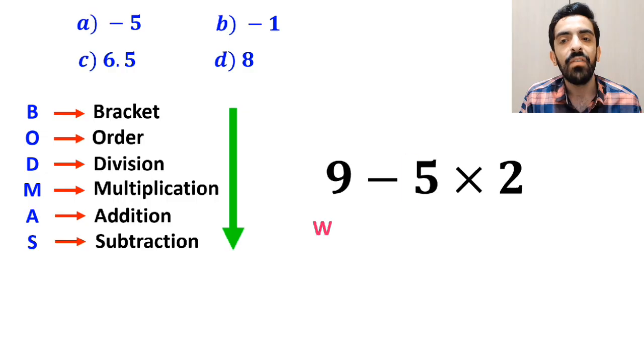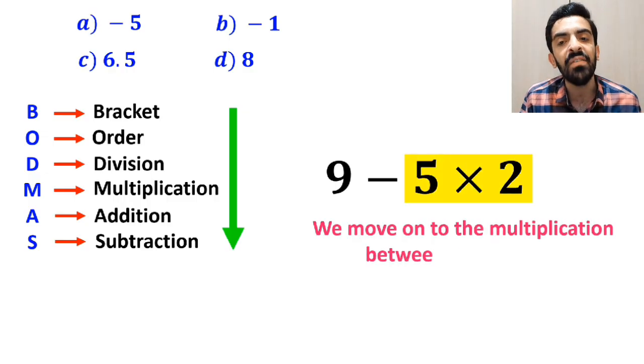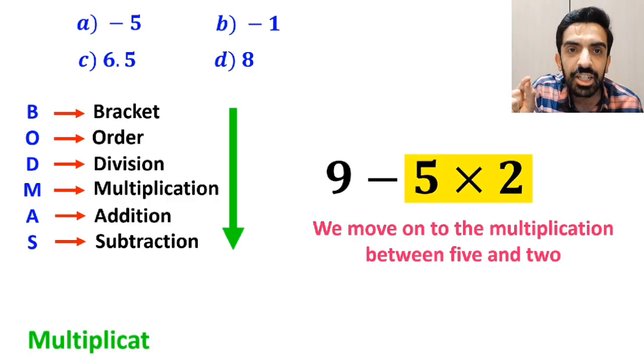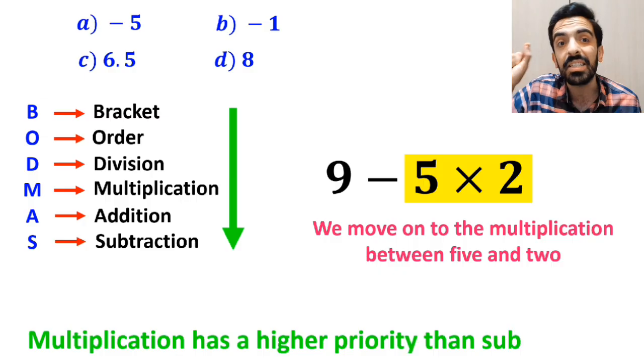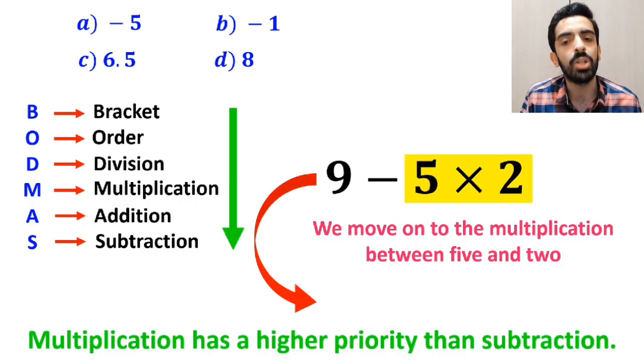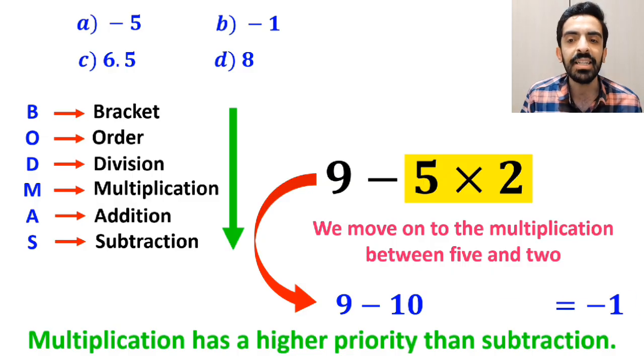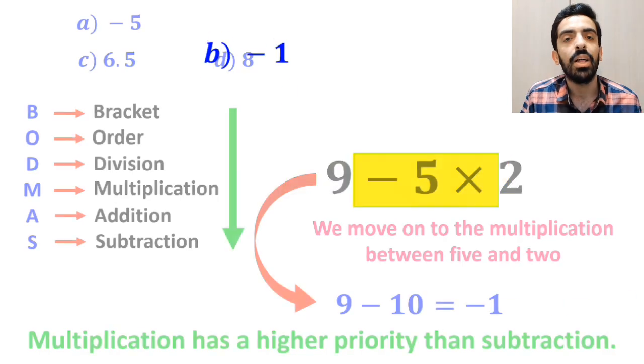And the final step, we move on to the multiplication between 5 and 2, because multiplication has a higher priority than subtraction. So, we write this expression as 9 minus 10. And finally, we get the answer negative 1. Therefore, option B is the correct answer to this question.